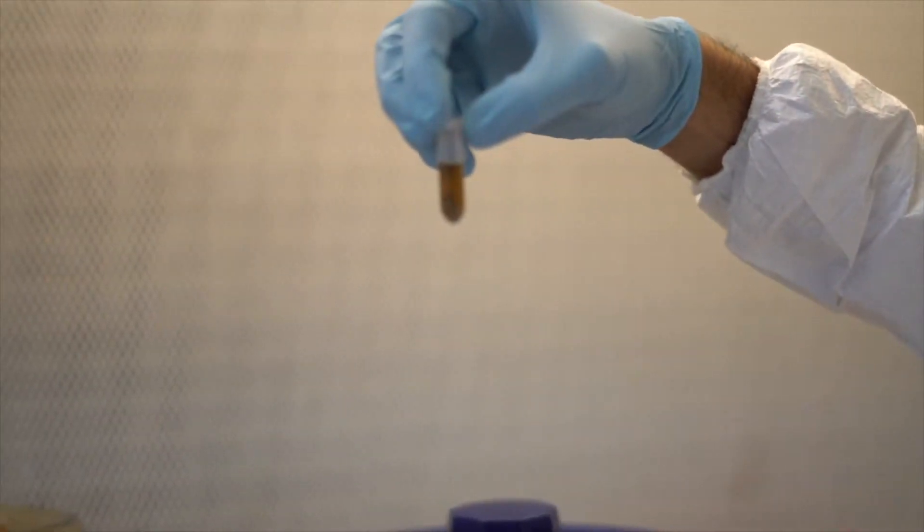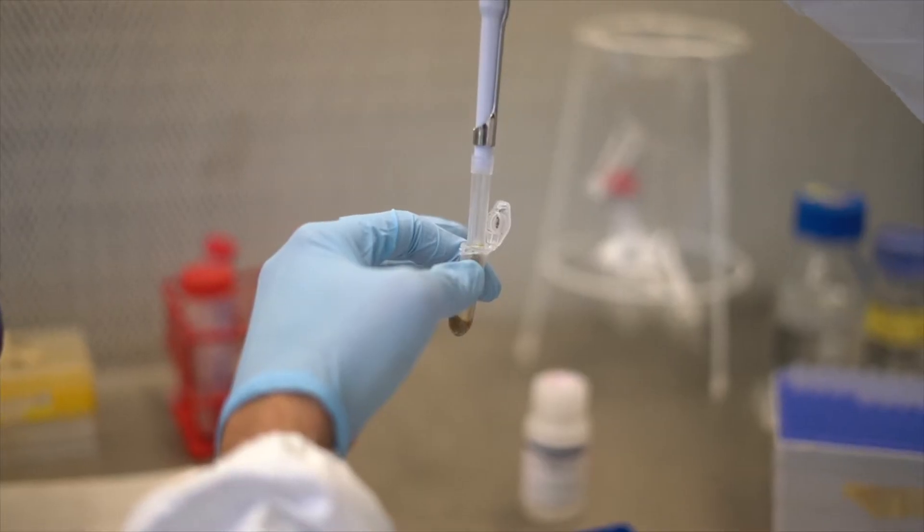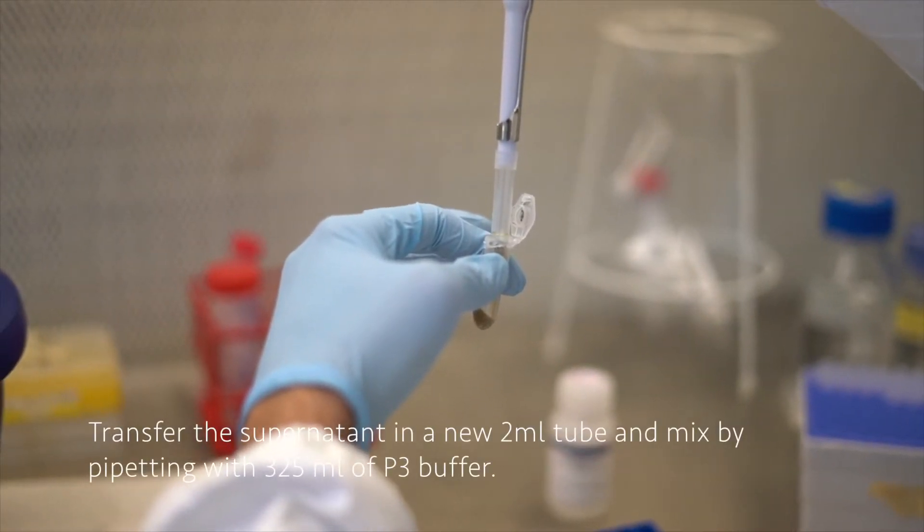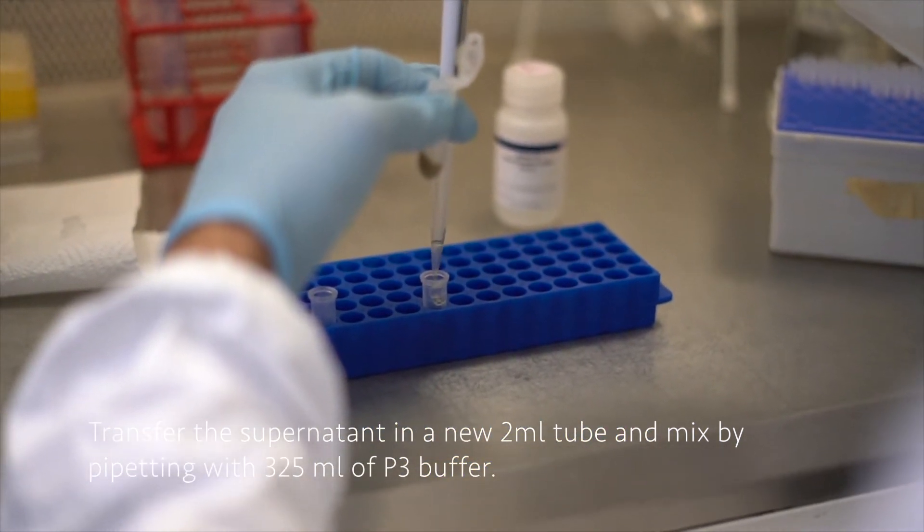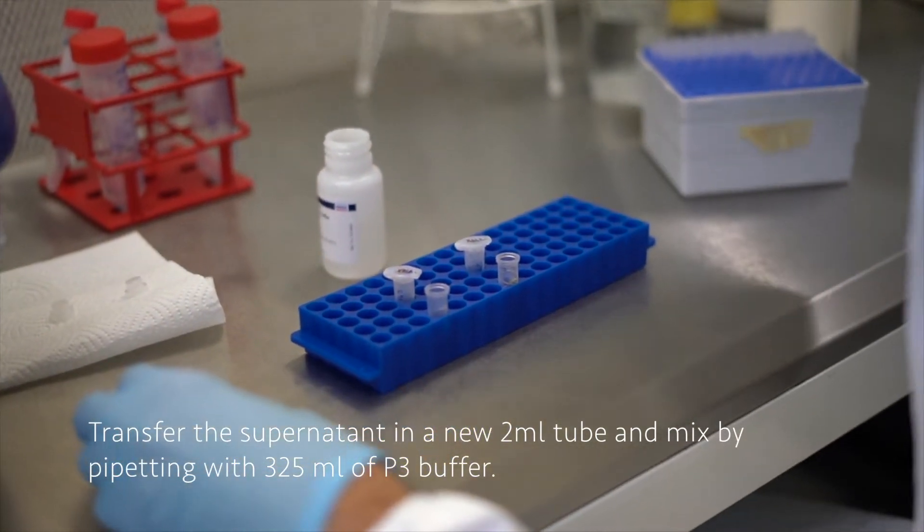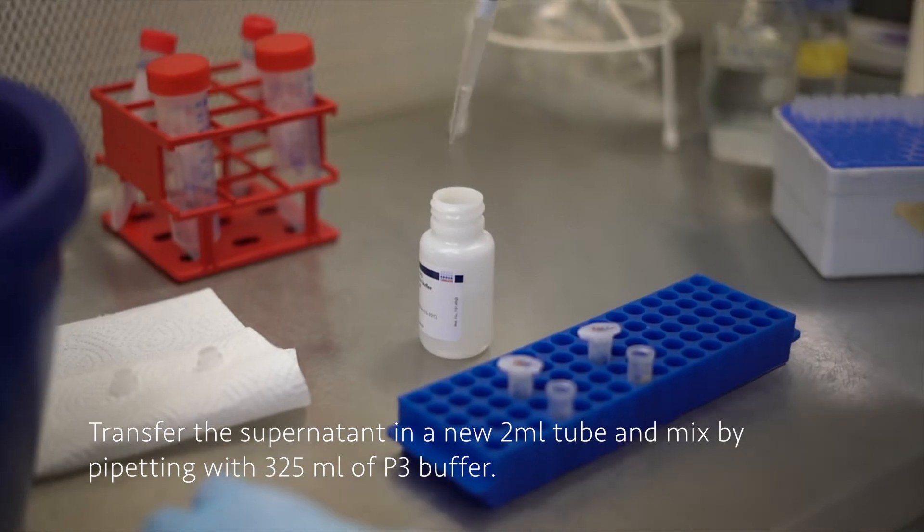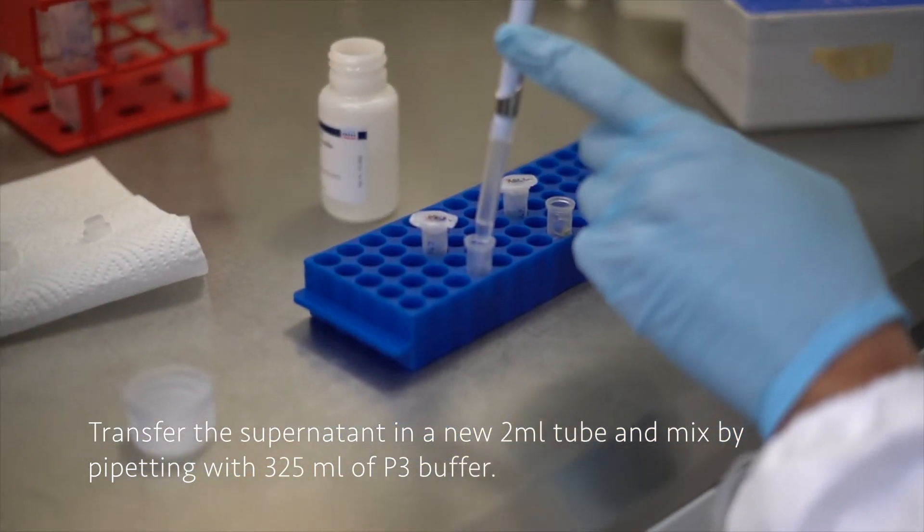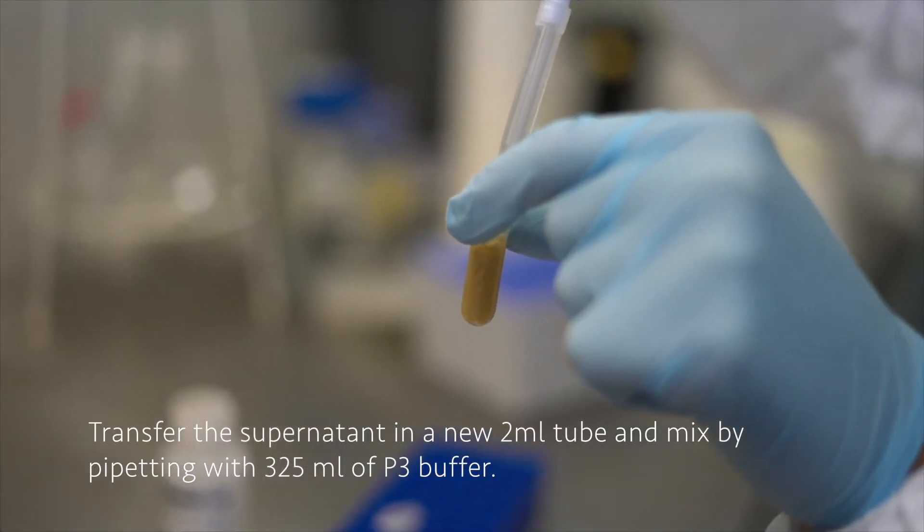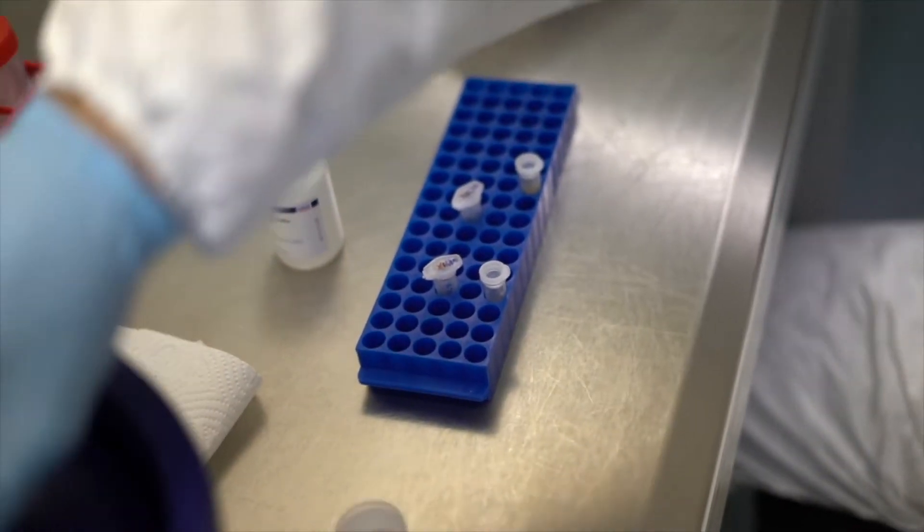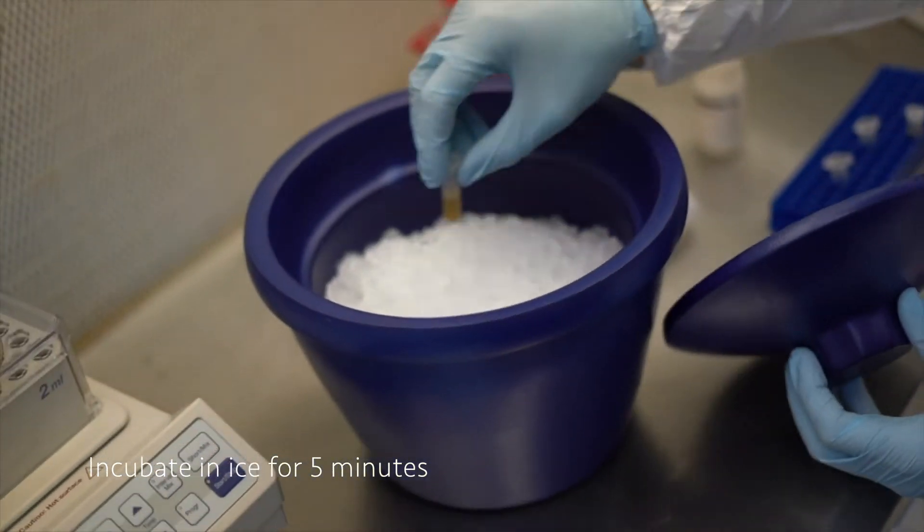After centrifugation you can see there is something sedimented on the bottom of the tube. We have now to take the supernatant, more or less 1.2 milliliters, place in a new 2 milliliter tube, and then mix it with 325 microliters of P3 buffer. We can mix by pipetting, the solution will get whitish and somehow also dense. Now we can incubate them in ice for five minutes.